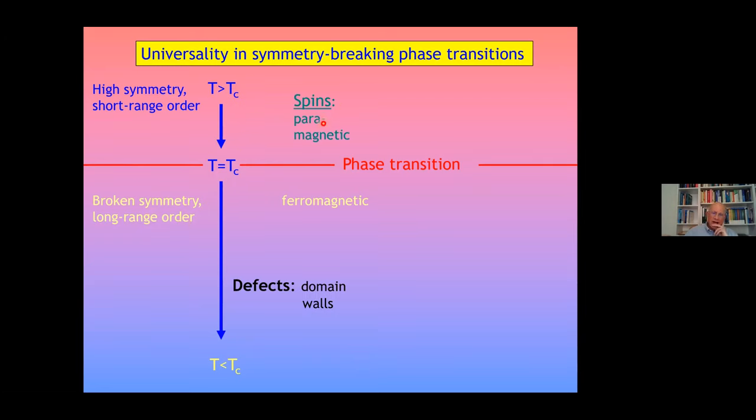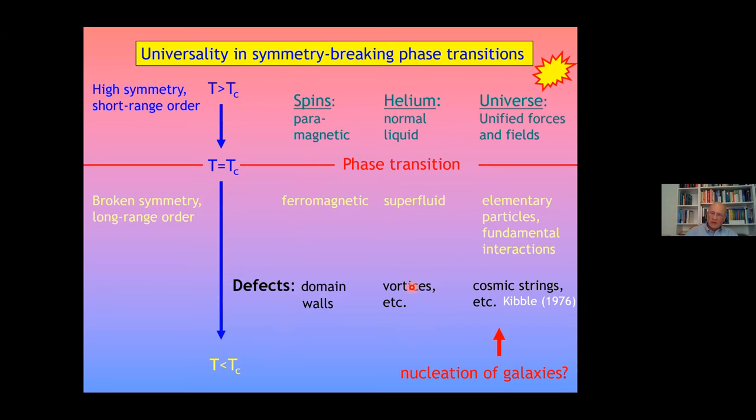Take spins. In the high temperature phase, it's paramagnetic. Below T_C, it is ferromagnetic, and there can be defects, domain walls. In helium-3 or helium-4, at large temperatures, it's normal liquid. Below, it's superfluid, and there are defects, for example, vortices. The interesting thing is, the universe at its symmetry broken ground state, the physical vacuum, can be viewed as a complicated condensed matter system.